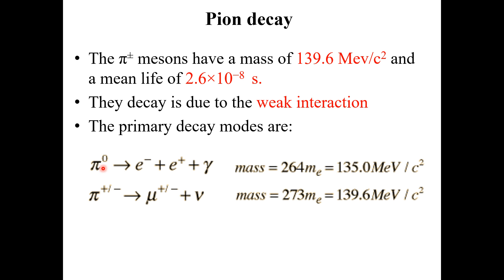For the neutral pions, the neutral pions decay into electrons and positron pair, along with gamma photons. The mass of the neutral pions is equal to 264 times the mass of the electron, which is equal to 135.0 MeV/c².